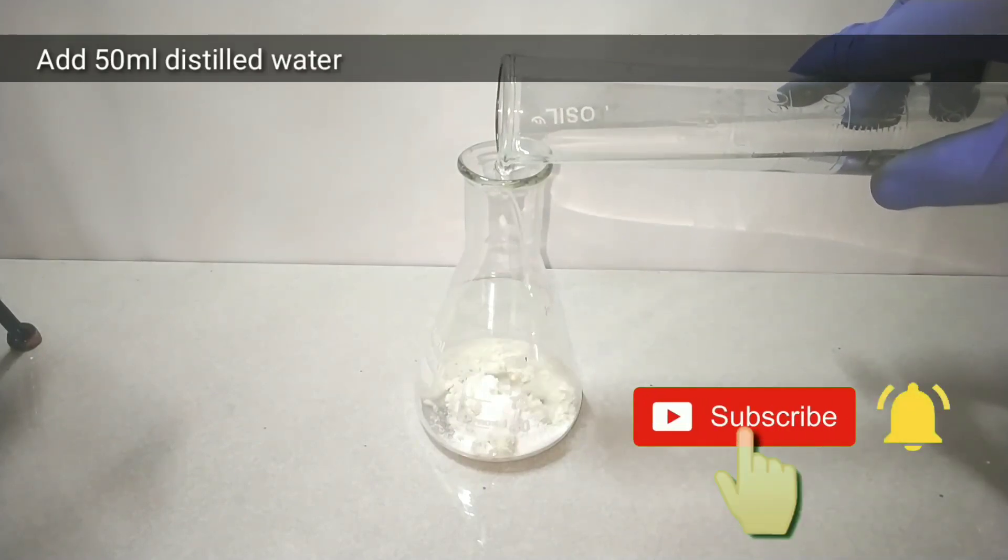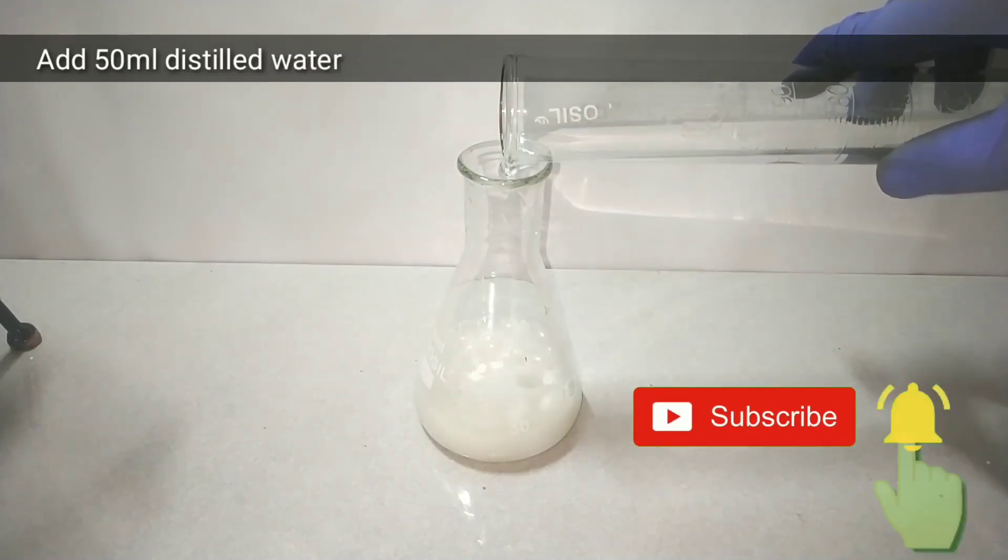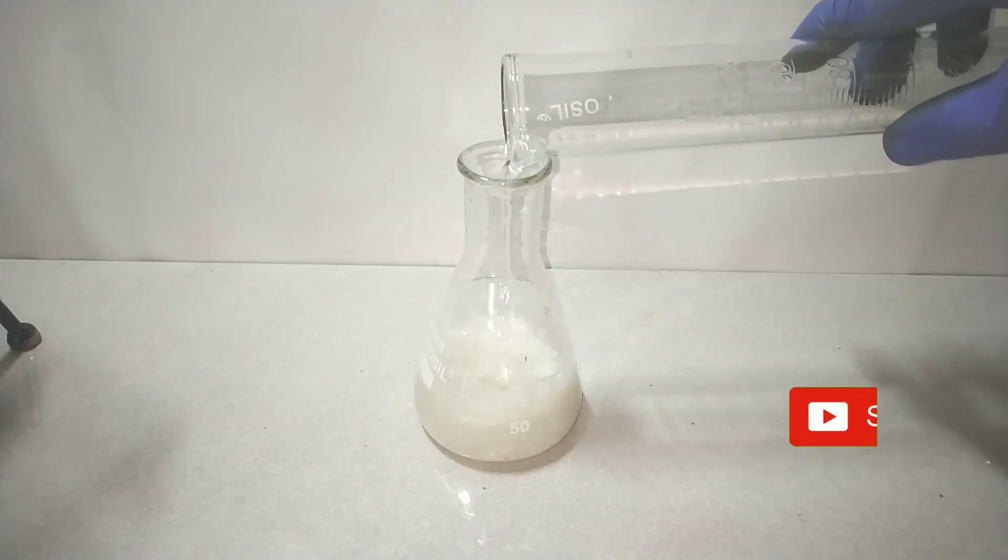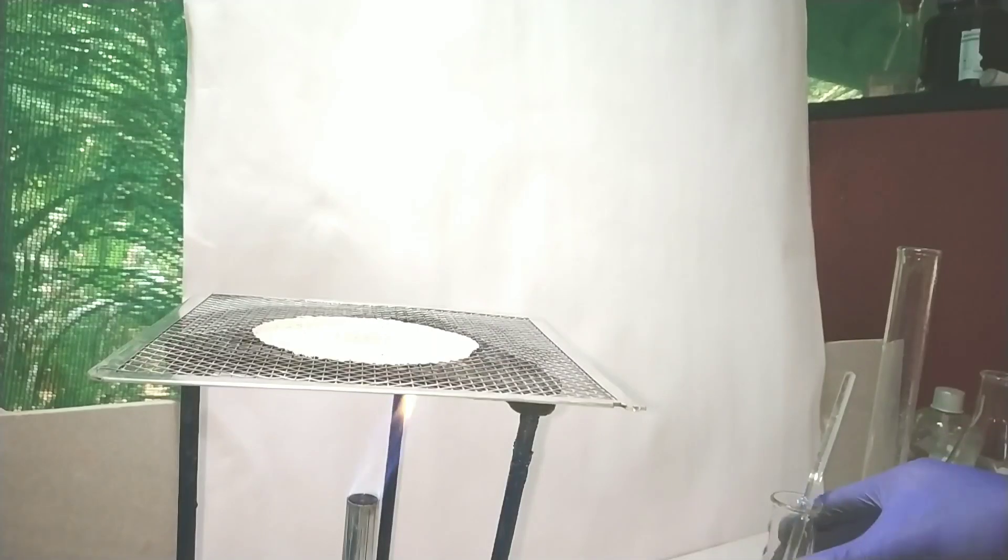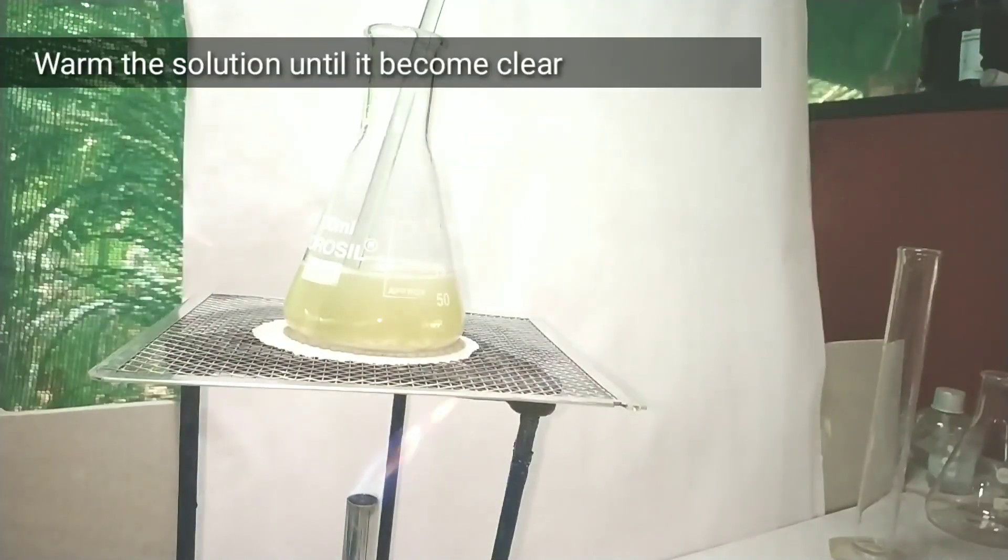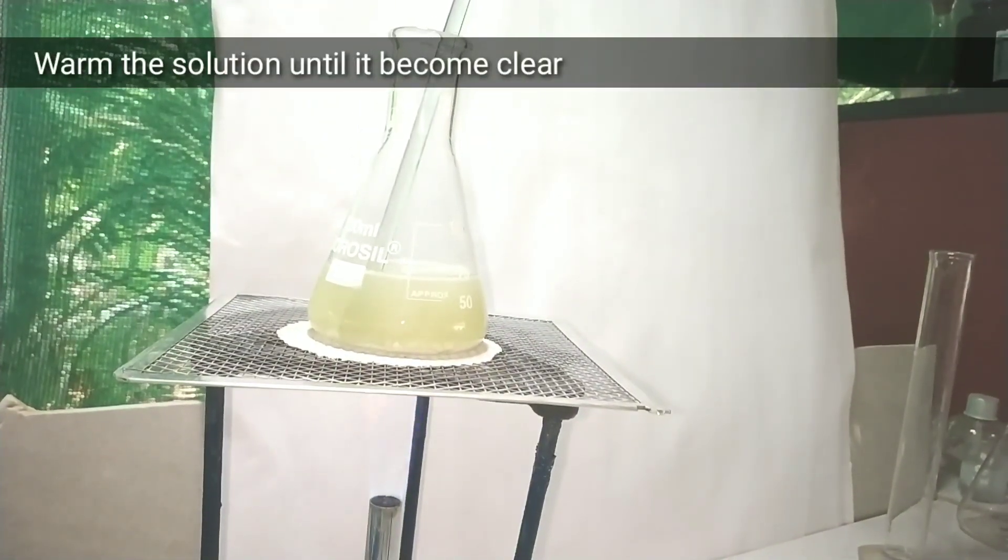Into that we add 50 ml of distilled water to start the reaction. Sulfanilic acid, being an acid, starts reaction with the carbonate giving out carbon dioxide which you can see as the effervescence. It forms sodium salt of para-amino benzene sulfonic acid.